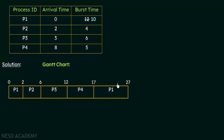Here we have the complete Gantt chart for these four processes. We must always keep in mind that this is preemptive. Whenever a process arrives, we must closely observe the remaining burst time of the currently executing process — not the total burst time — and compare it with the arriving process. Whichever has the lesser remaining time gets the CPU.